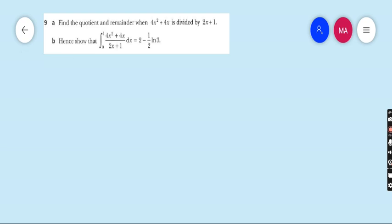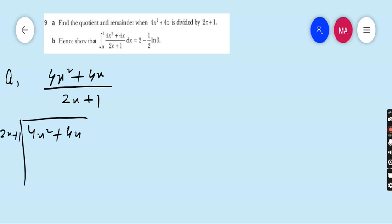Part a: Find the quotient and remainder when 4x squared plus 4x divided by 2x plus 1. 4x squared plus 4x is divided by 2x plus 1. 2x times 2x is 4x squared, 2x times 1 is 2x. 4x minus 2x is 2x remains.